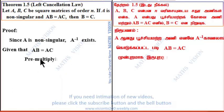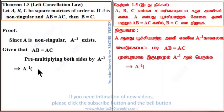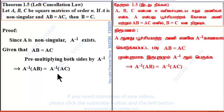Premultiplying both sides by A inverse, we get A inverse into AB equals A inverse into AC.